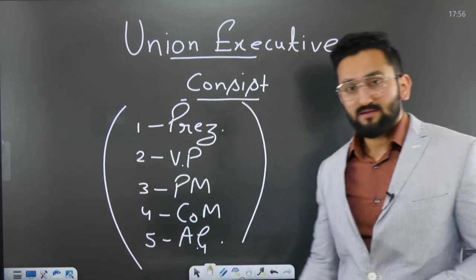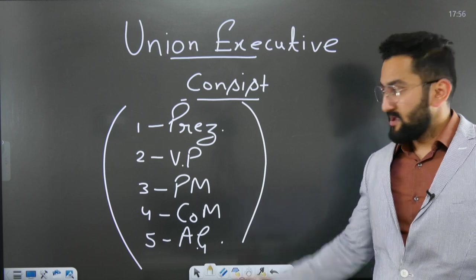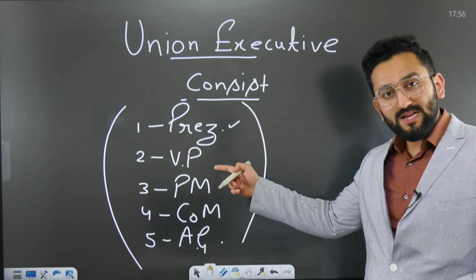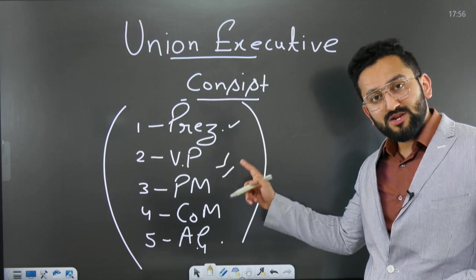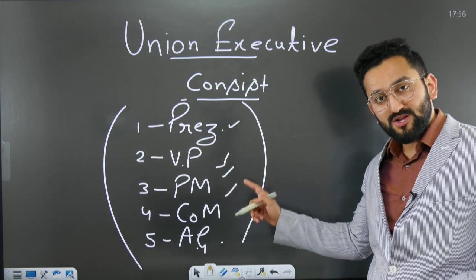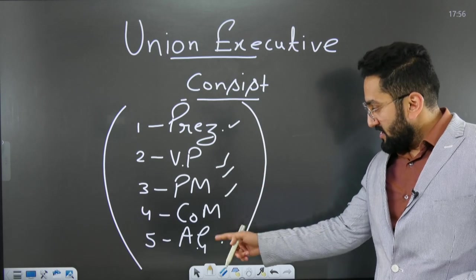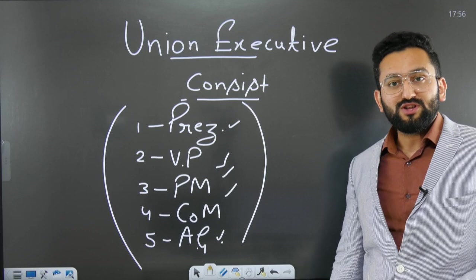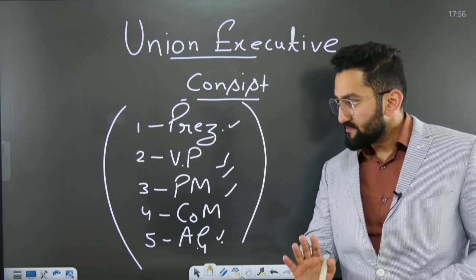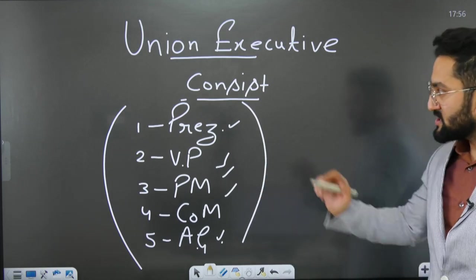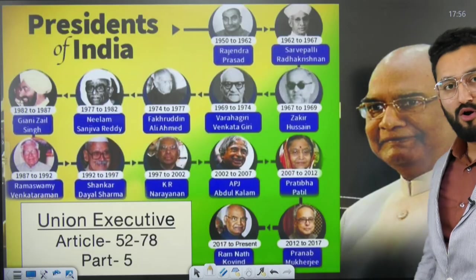If UPSC asks what positions are part of Union Executive as mentioned in Part 5, you should know these are: President, Vice President, Prime Minister, Council of Ministers, and Attorney General.